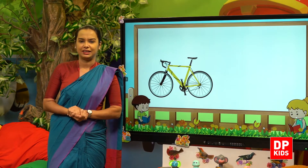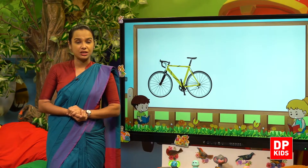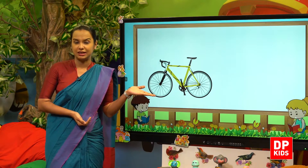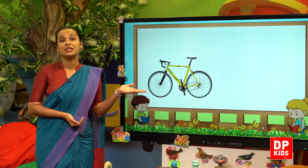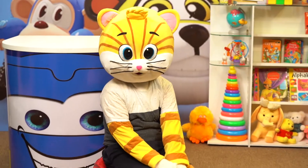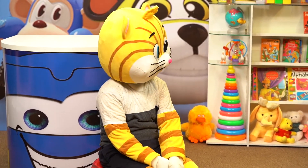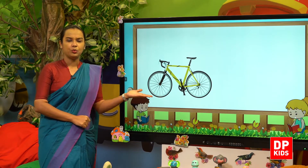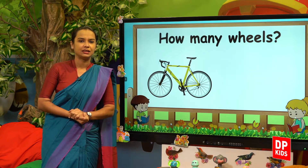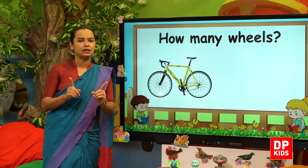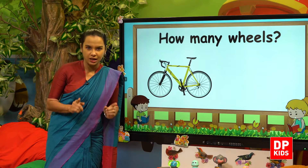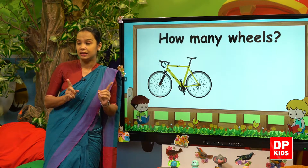Right, so let's count using number two. Kitty, are you ready? Yes, Kitty is ready. Let's count. Oh, what's this? A bicycle.